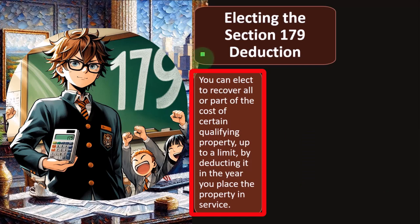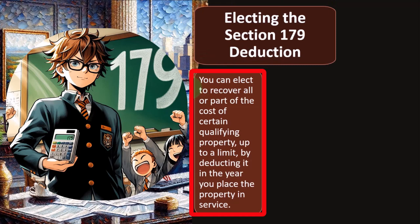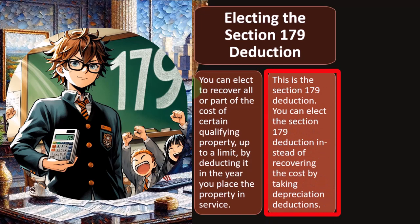Therefore, if we can qualify for a 179 deduction, we're going to take it generally, or some combination of that and the special depreciation if we can. You can elect to recover all or part of the cost of certain qualified property up to a limit by deducting it in the year you place the property in service. This is the Section 179 deduction. You can elect the Section 179 deduction instead of recovering the cost by taking depreciation deductions.